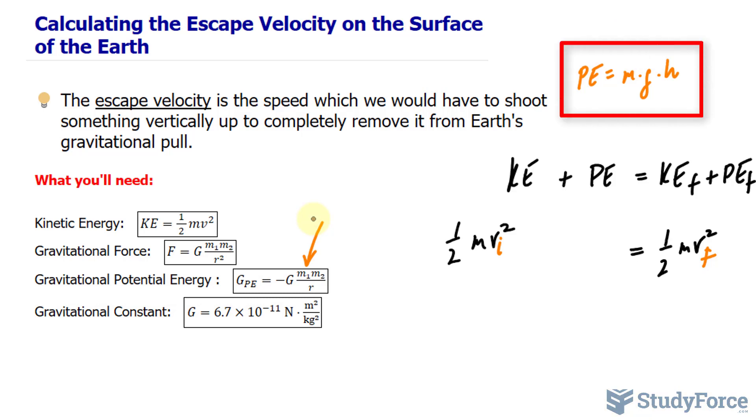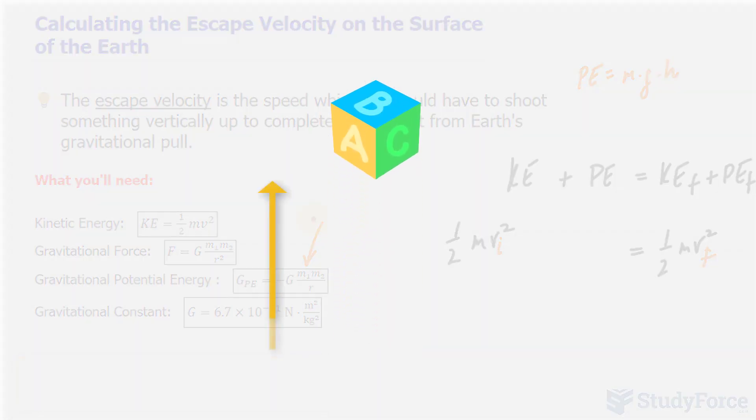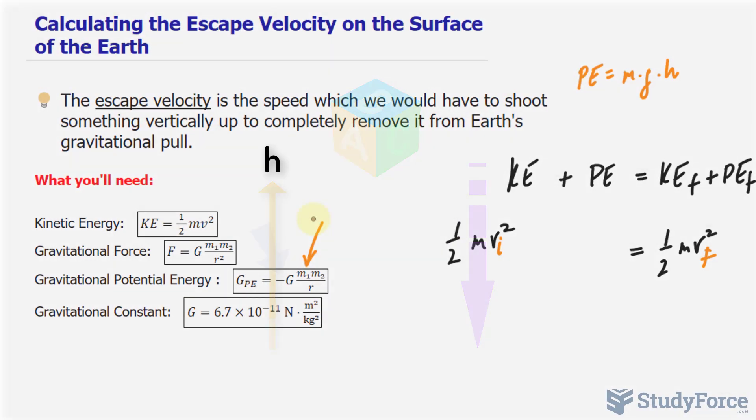So m times g times h cannot apply here. You'll also notice that the formula is negative, and that's not a mistake. Potential energy is a form of work. So if we were to lift an object from the ground to some height h, for example, the force applied to make that object rise to h is positive since it's directed upwards. But because gravity pulls everything down, the gravitational potential energy is written negative because its force is acting in the opposite direction.